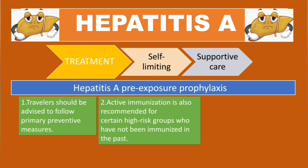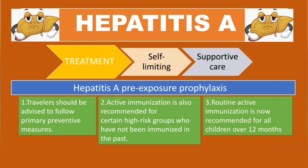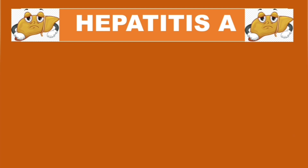High-risk groups include: men who have sex with men, people with chronic liver disease, and people who travel to countries where HAV is endemic. Rule three: in most countries, routine active immunization is now recommended for children over 12 months of age.